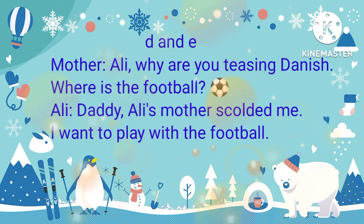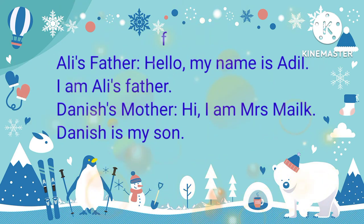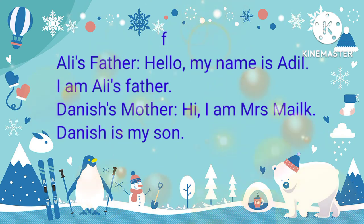Ali says to Daddy: 'Ali's mother scolded me. I want to play with the football.' In pictures D and E they are complaining. In picture F, Ali's father says: 'Hello, my name is Adil. I am Ali's father.' Danish's mother replies: 'Hi, I am Mrs. Malik. Danish is my son.' In pictures D and E they are introducing themselves.